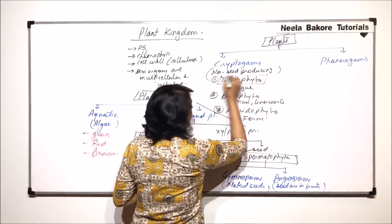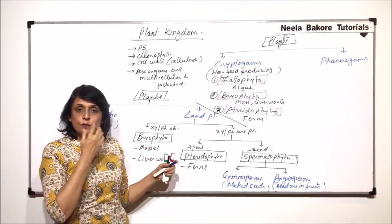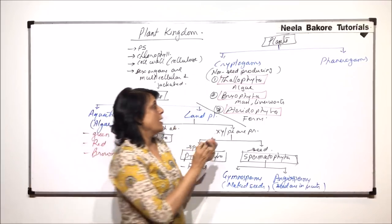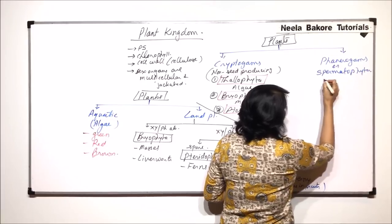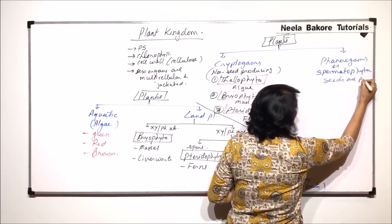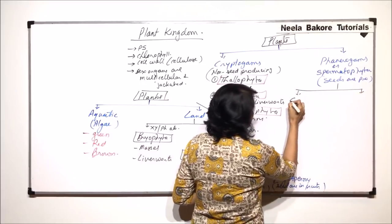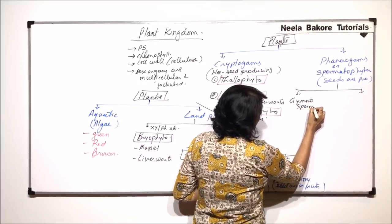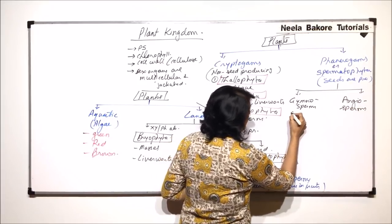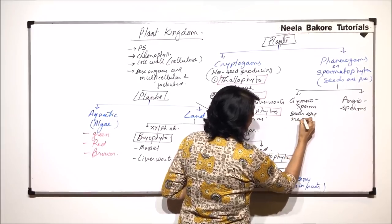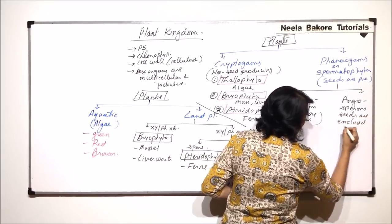So under Cryptogames we have Thallophyta, Bryophyta, and Pteridophyta. They reproduce by formation of simple structures called spores but with no seed formation. Phanerogames — also known as Spermatophyta — are the seed-producing plants. They are classified into two categories: Gymnosperms, where seeds are naked, and Angiosperms, where the seeds are enclosed in fruits.